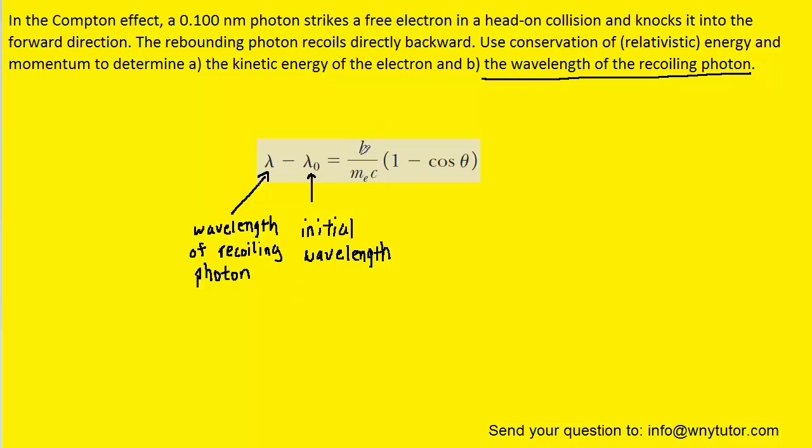Here, H is Planck's constant. We have the mass of the electron that the photon is colliding with. C is the speed of light. And then theta is the angle between the incident and scattered photons.